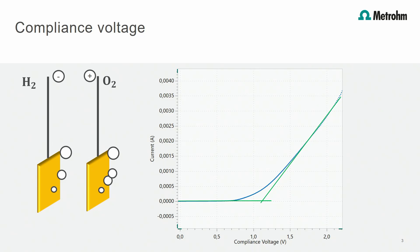The potential which is applied between the electrodes is called compliance voltage. To run electrolysis applications it is always necessary that the applied compliance voltage is higher than the decomposition voltage. Depending on the experiment this can be a quite high voltage and could push the potentiostat to its limits.